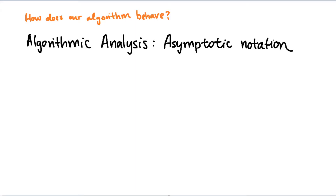In looking at any given algorithm that we have for a classical computer to use, a number of concepts and questions arise. One of the most common wonders is: how does our algorithm behave? And more importantly, how does our algorithm behave as the size of the input grows larger and larger?